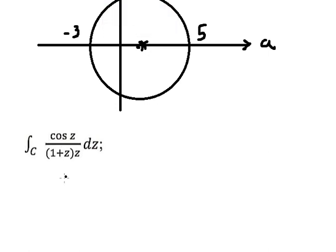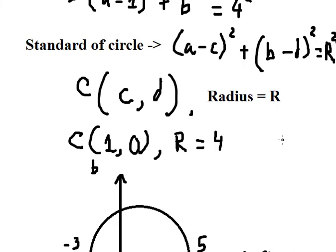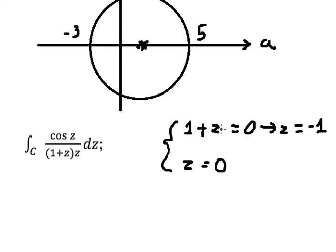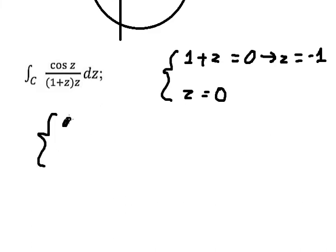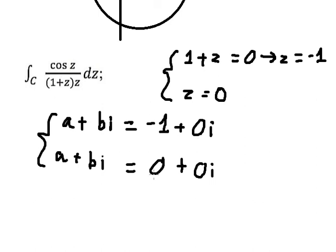Now we need to find the poles from the denominator. So I will set each factor equal to zero: z plus one equals zero and z equals zero. Putting one into here we get z equals negative one, and z equals zero. We know that z equals a plus bi, so we can transform: negative one is negative one plus zero i, and zero is zero plus zero i.